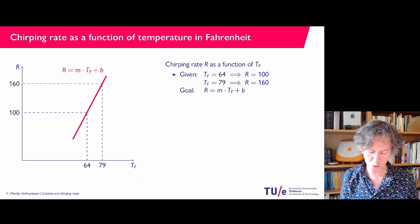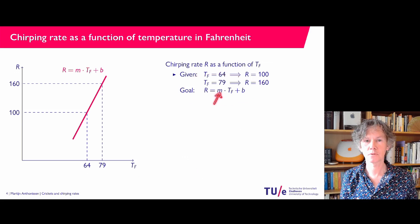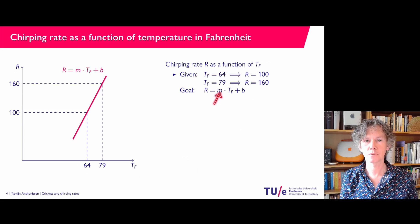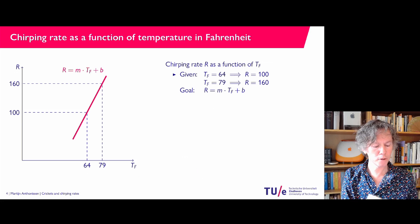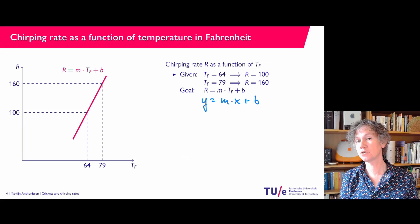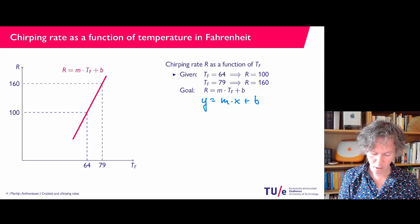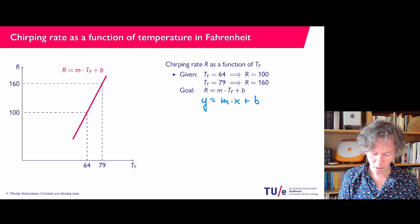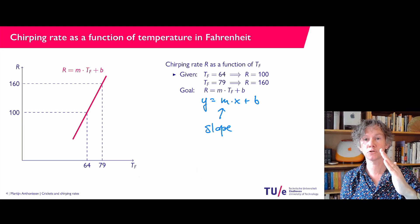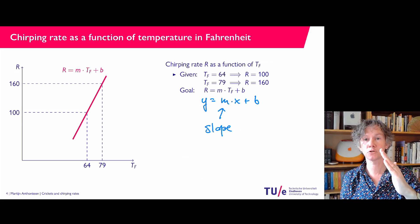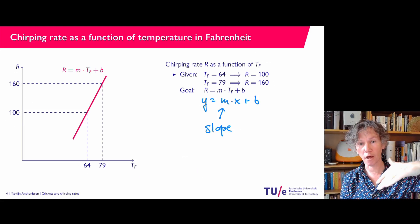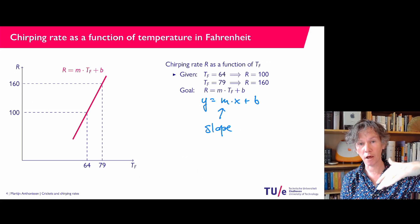The general equation for a straight line is R equals M times Tf plus B — or as you would write it in high school, Y equals M times X plus B. The role of X here is temperature in Fahrenheit, the role of Y is chirping rate. This M is called the slope, and it indicates whether this line is going up or down and how fast. If M equals zero you get a horizontal line, if M is positive the line goes up, and if M is negative the line goes down.